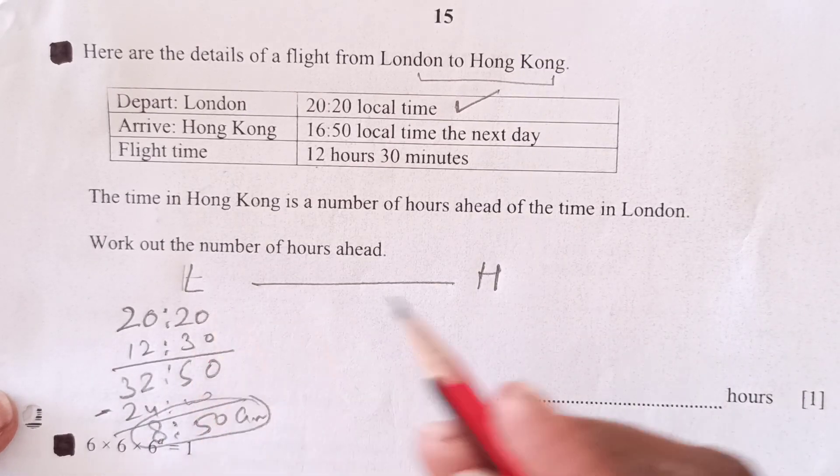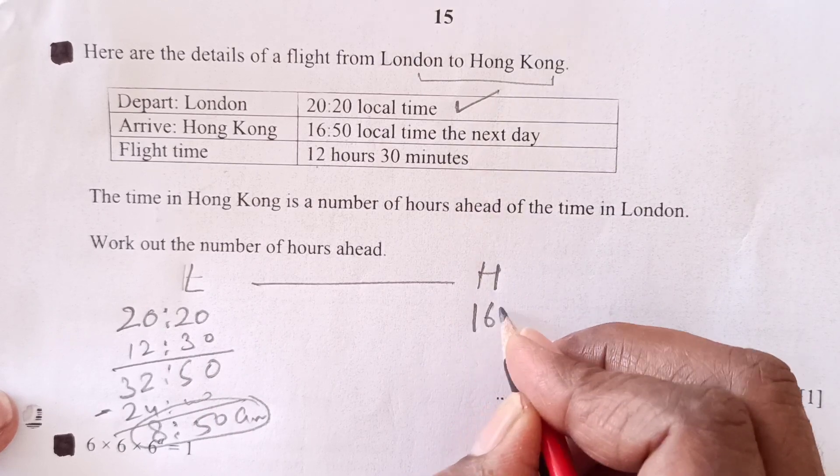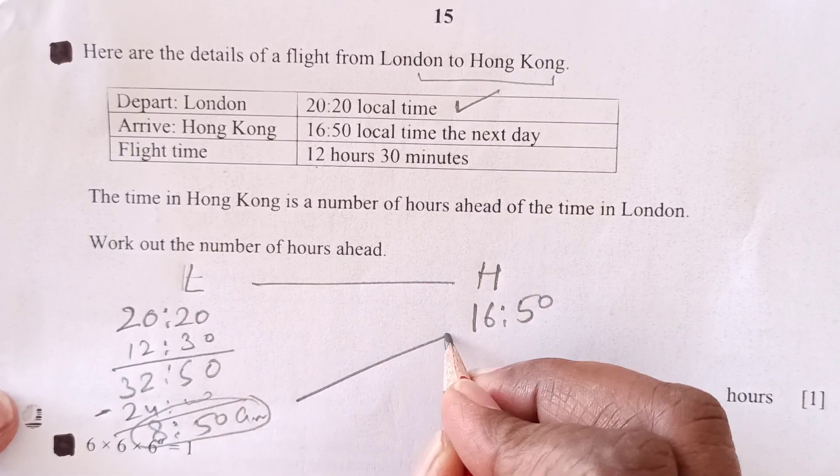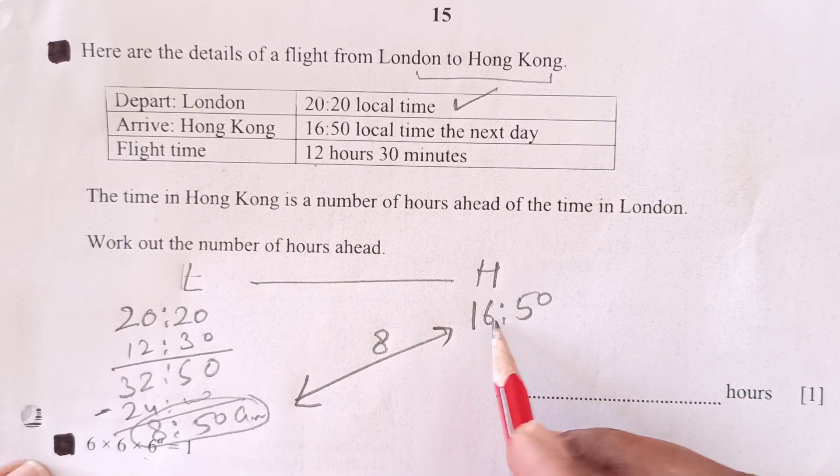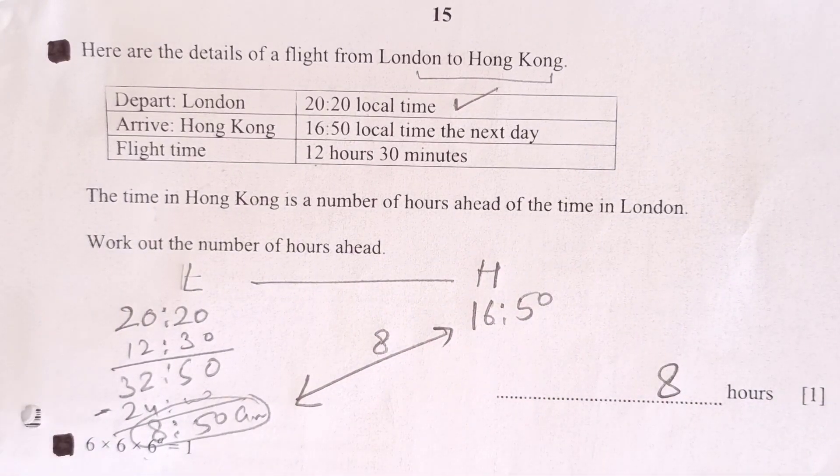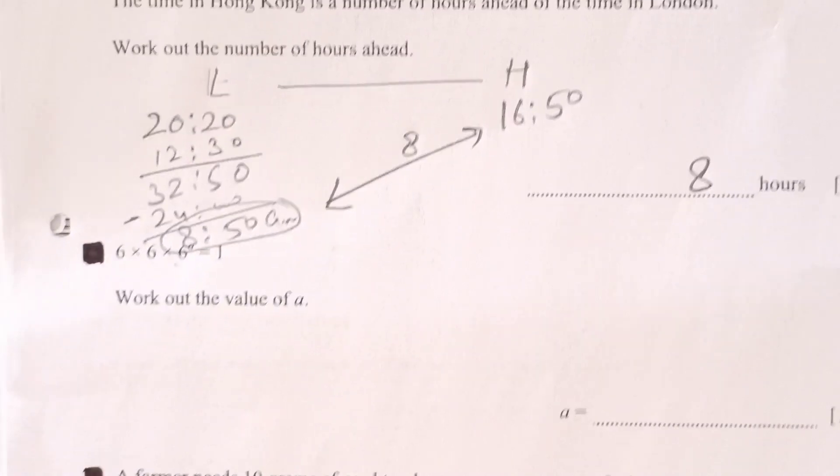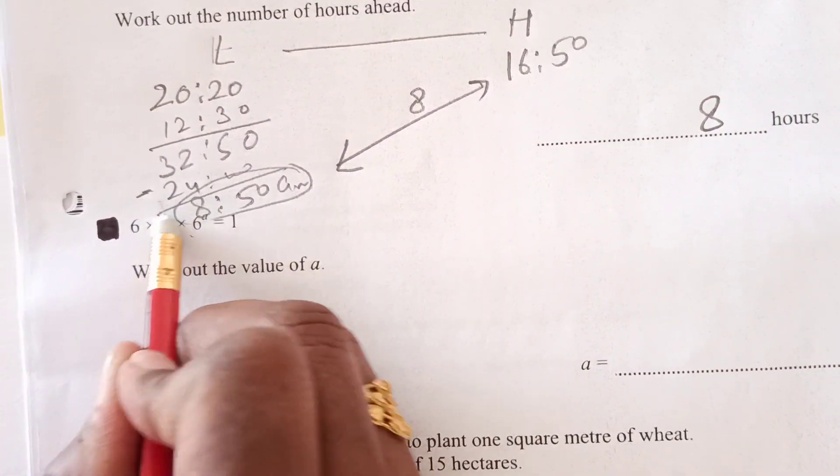But in Hong Kong it says 16:50. So if you see the time difference here, this is 08:50 to 16:50, so time difference is 8 hours.